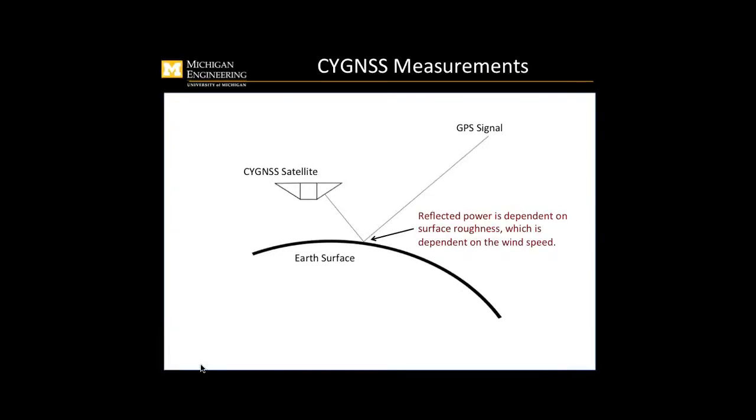What Cygnus does is it measures the wind speed over the ocean by measuring GPS signals. This is a Cygnus satellite here, and there are antennas on it, and it measures the GPS signal reflected off of the ocean. The reflected power from the reflected signal tells you basically how turbulent the ocean surface is.